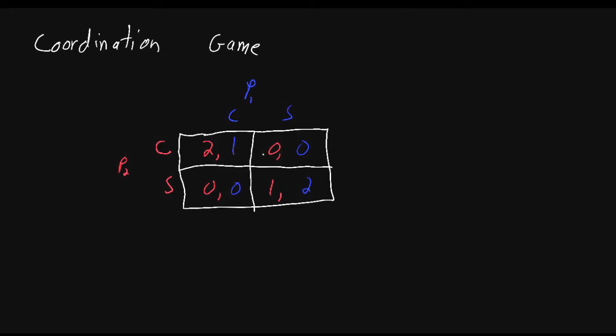Let's first review last lesson: is there a dominant strategy? A dominant strategy is a strategy or action for a player that is best in terms of highest utility, regardless of what the other player does. Let's check for player two. If player one chooses to go to the concert, player two prefers also to go to the concert — he prefers two over zero. When player one goes to the sporting event, player two would choose the sporting event, because one is greater than zero. Therefore, player two's best action does depend on what player one does, so player two does not have a dominant strategy. The same argument can be made for player one, so neither player in this game has a dominant strategy.